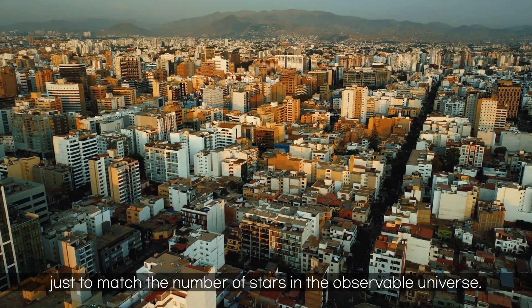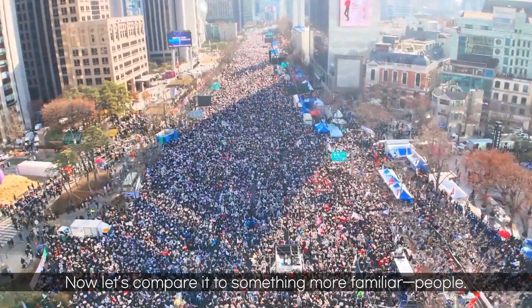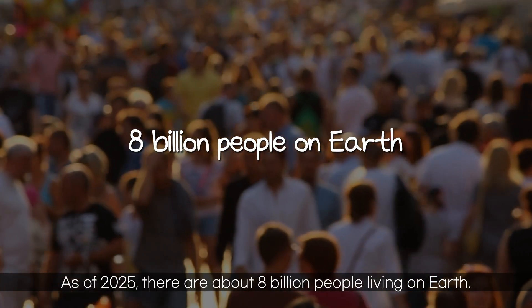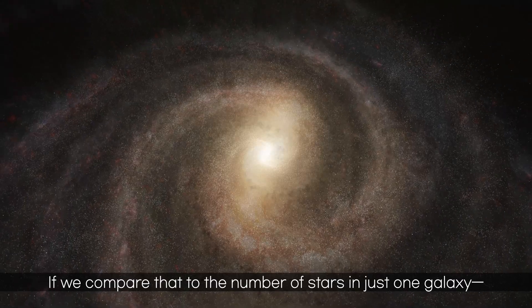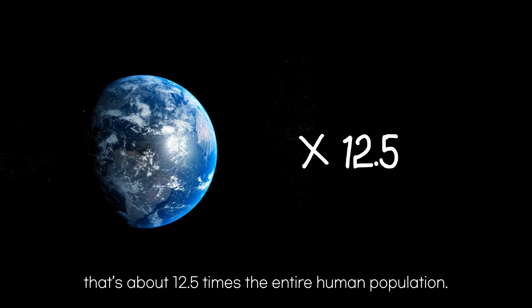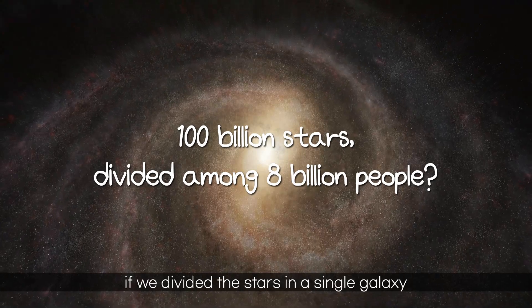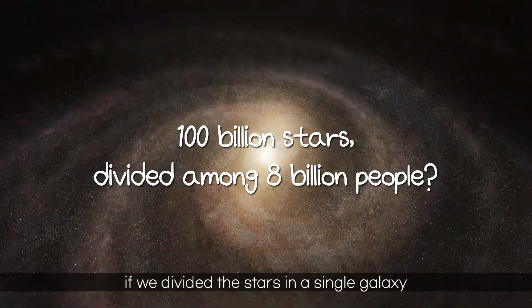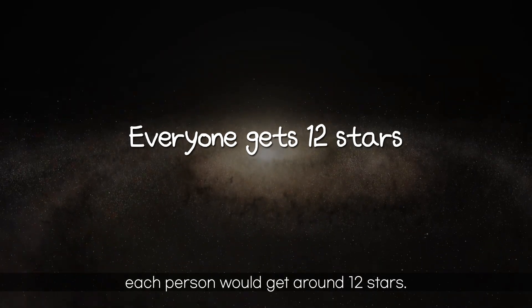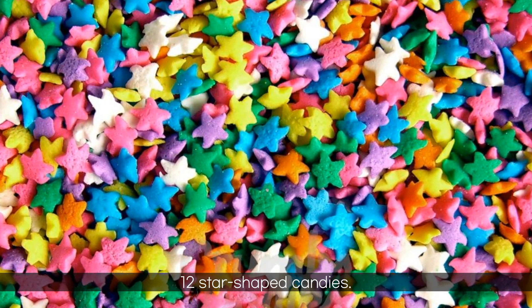Now let's compare it to something more familiar. People. As of 2025, there are about 8 billion people living on Earth. If we compare that to the number of stars in just one galaxy, that's about 12.5 times the entire human population. So imagine this. If we divided the stars in a single galaxy equally among everyone on Earth, each person would get around 12 stars. That's like each of us holding a little pack of 12 star-shaped candies.